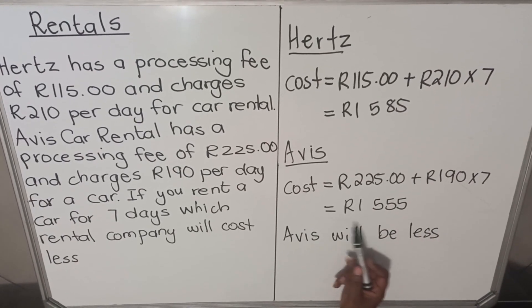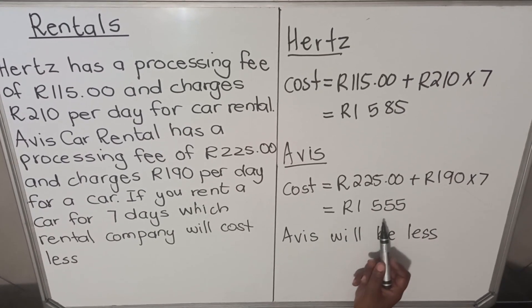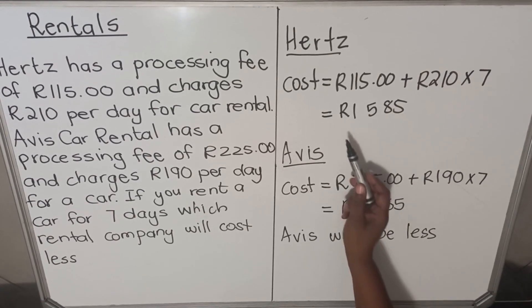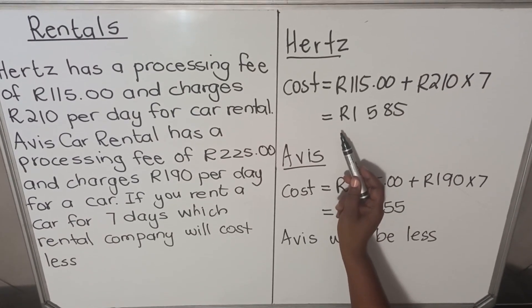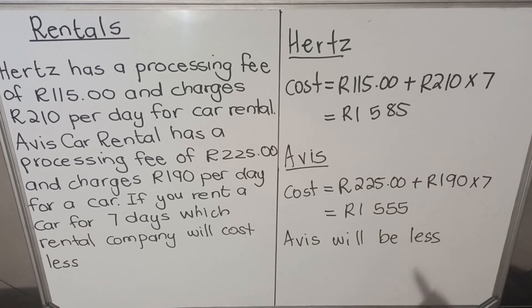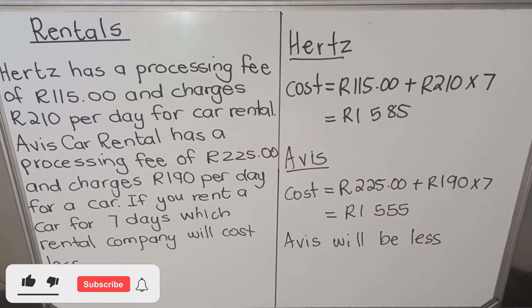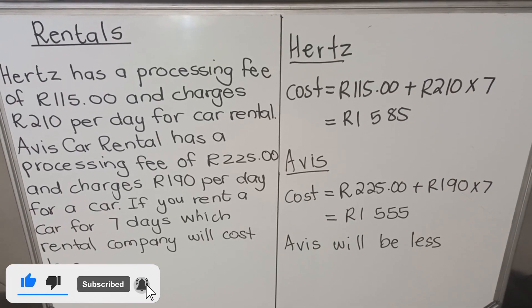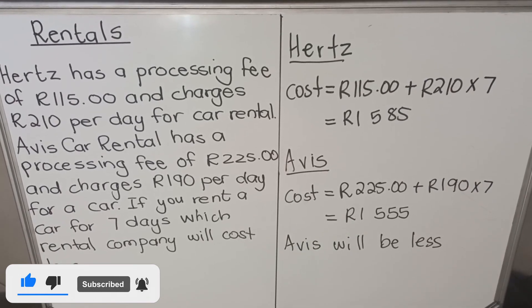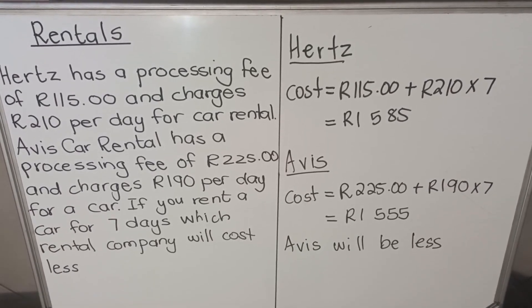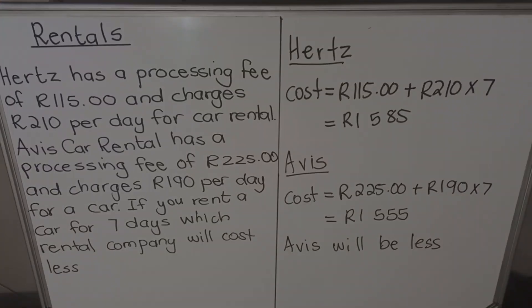Avis costs 1555 and Heads costs 1585 — they are almost the same, but Heads costs a little bit more. This is how you calculate rentals. You need to read what you are being charged; in some rentals they will also charge you insurance, which you must add. Thank you for watching, this is the end.